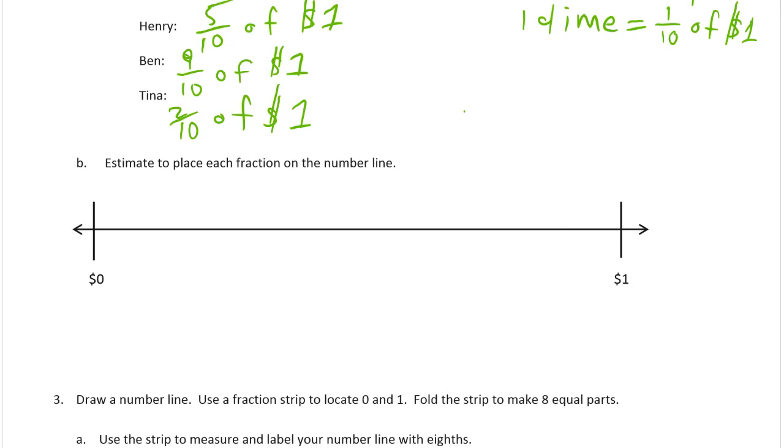Estimate to place each fraction on the number line. We need tenths, right? How did this work before? We had fifths and then we cut all the fifths in half. So let's do that. Fifths, we need 4 lines to make fifths. So it will be about 1, 2, 3, 4. And then cut each of these in half. 1, 2, 3, 4, 5. So those should all be tenths.